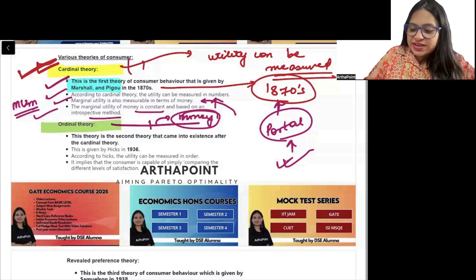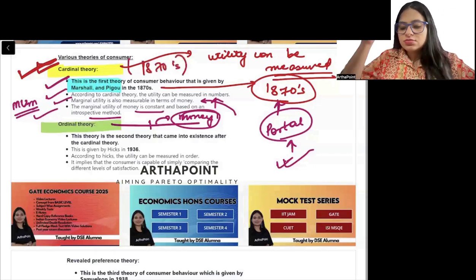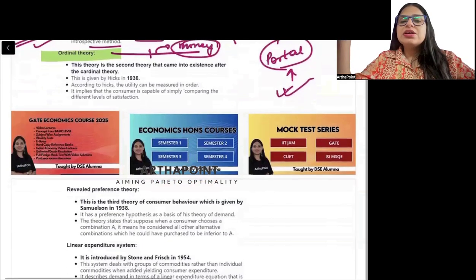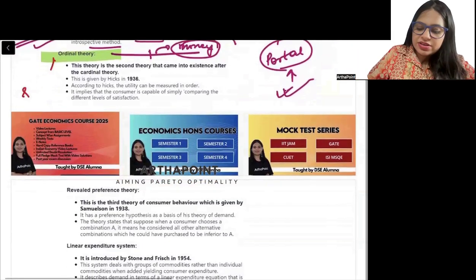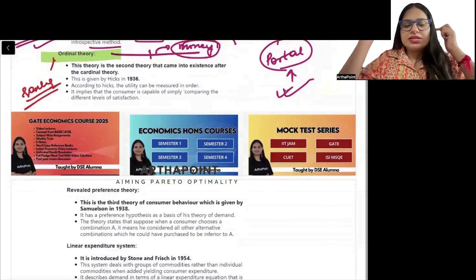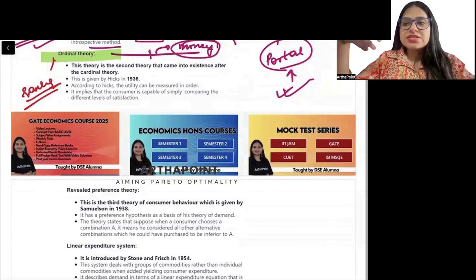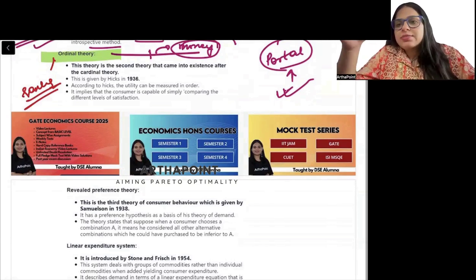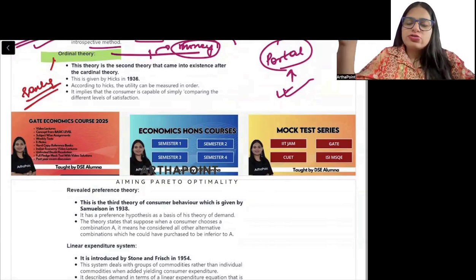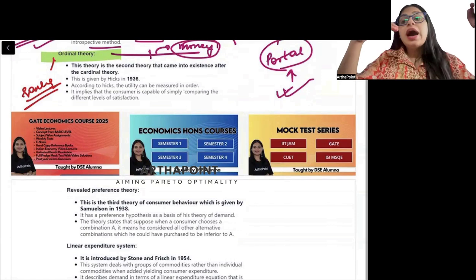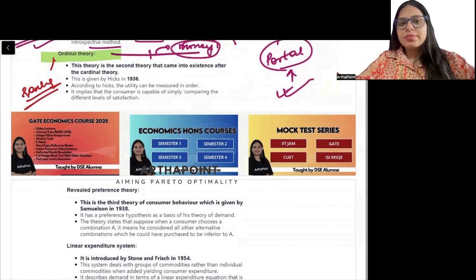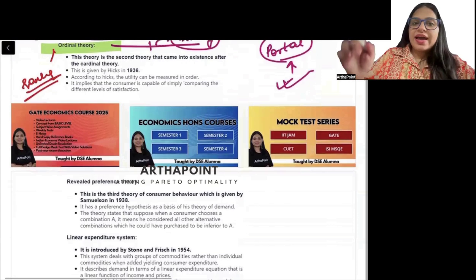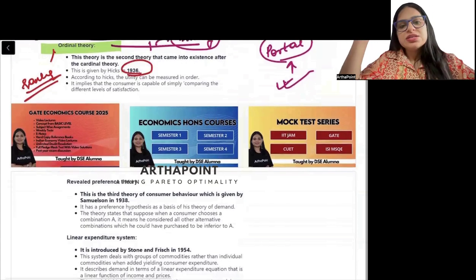So cardinal theory belongs to the 1870s. Ordinal theory is the theory which says that everything is on the basis of ranks — we do everything on the basis of ranking. We are not interested in measuring utility, but in ranking the bundle. This was given by Hicks in 1936.